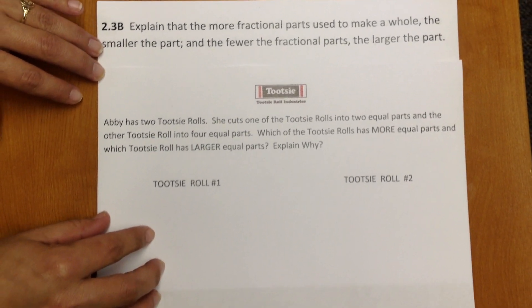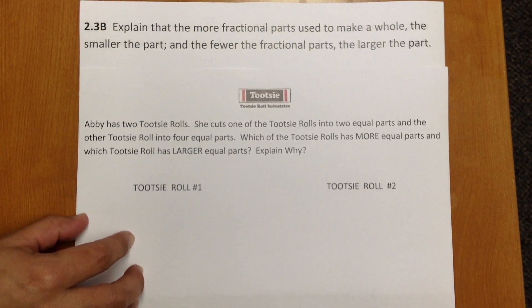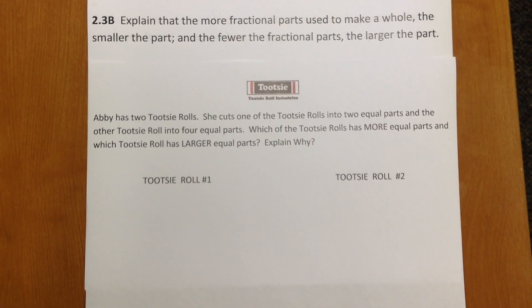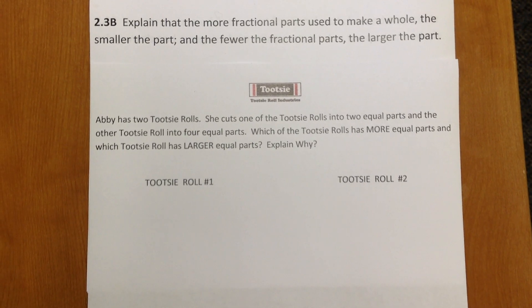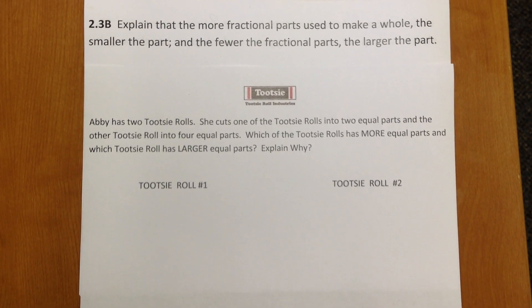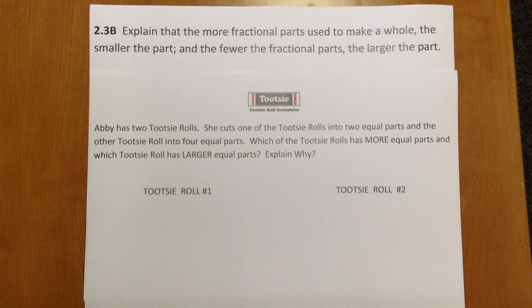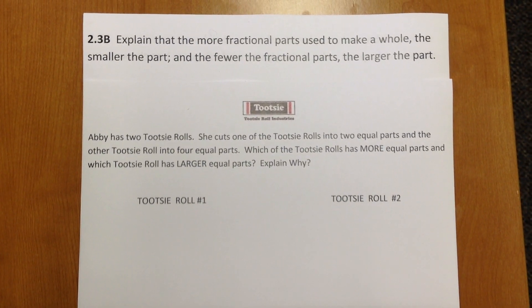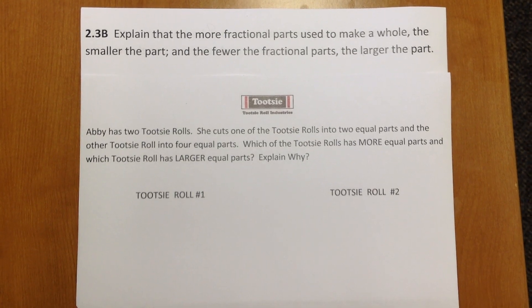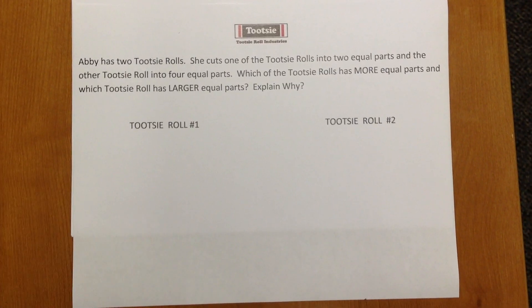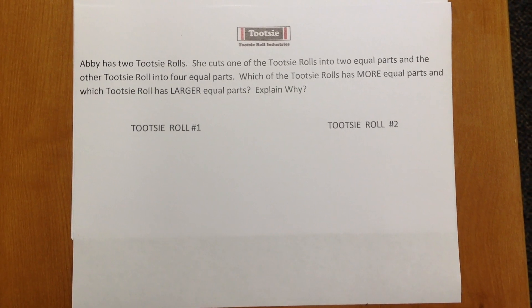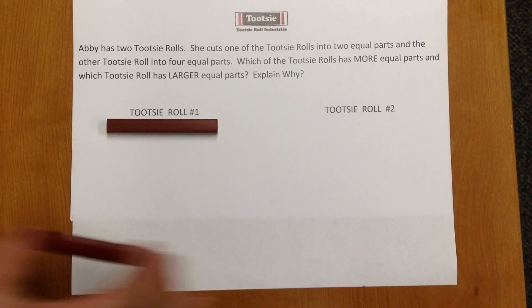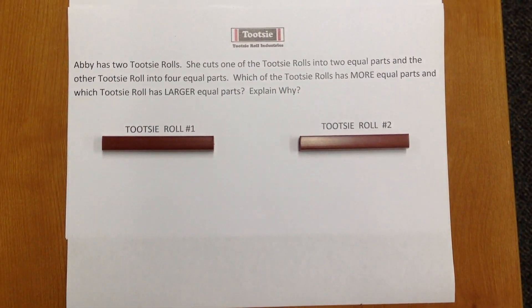Let's look at a scenario for this standard. Abby has two Tootsie Rolls. She cuts one of the Tootsie Rolls into two equal parts and the other Tootsie Roll into four equal parts. Which of the Tootsie Rolls has more equal parts and which Tootsie Roll has larger equal parts? Explain why. I'm going to use a brown Cuisinaire rod to represent Tootsie Roll number one and Tootsie Roll number two.